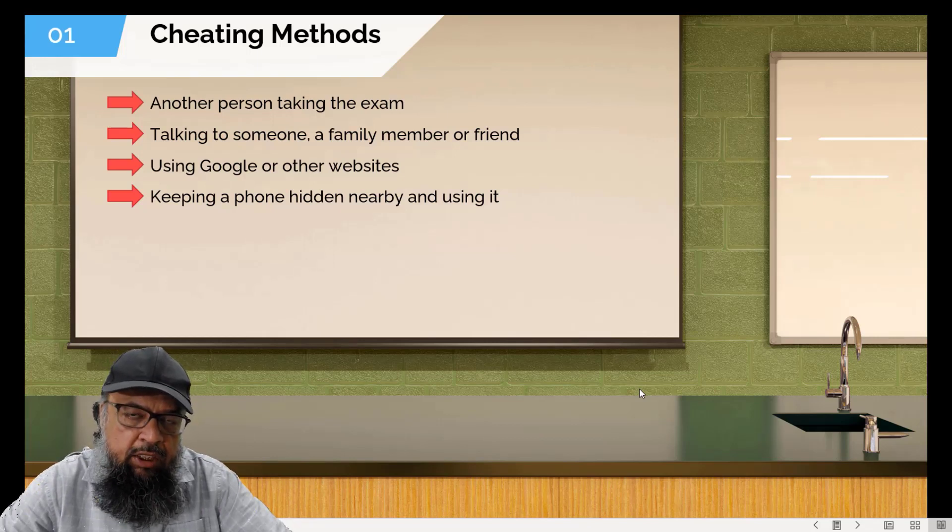So what they do is they keep the phone hidden, or camouflaged within their range. And when the exam starts, they get the phone, and then it's all easy. Because then they have many applications using which they can communicate to other friends and family members, and they can even get pictures, images, and solve questions as well.